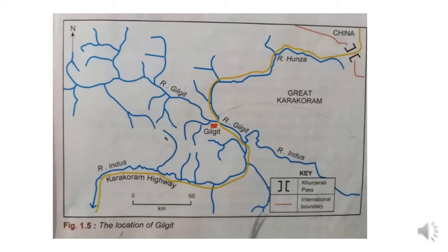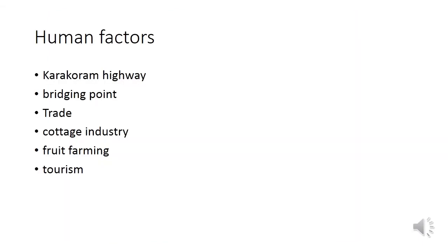After crossing the confluence you can see Gilgit. Human factors for growth include that the Karakoram Highway connects China with Pakistan and Pakistan's northern areas with other areas in the south. On River Gilgit there is a bridge, making it a bridging point. Trade is also practiced there because of Chinese goods and local goods as well.